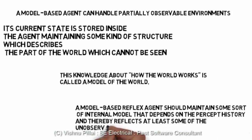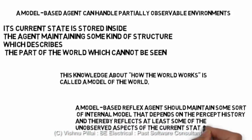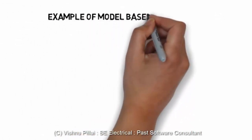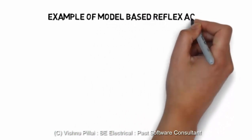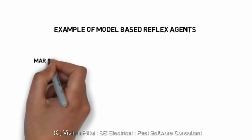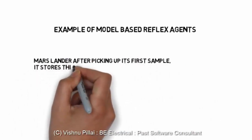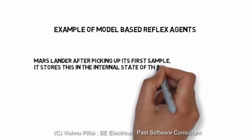A model-based reflex agent should maintain some sort of internal model that depends on the percept history. It also has a model of how the world will evolve and how the world will work. Since the world was in action even before the agent was placed in it, the previous evolution history of the environment is fed into the agent's knowledge base through algorithms, enabling the agent to consider that history while performing certain actions.